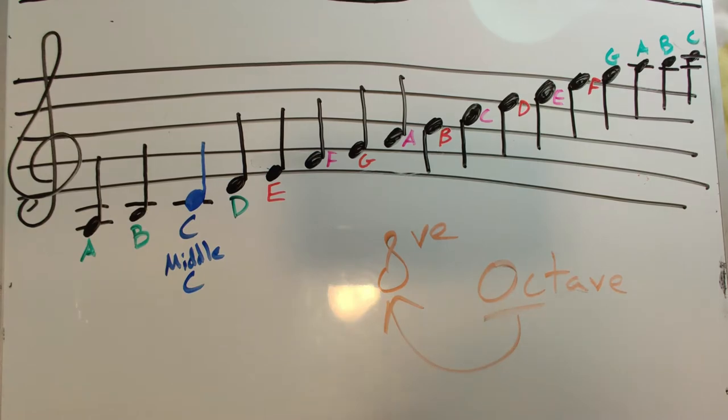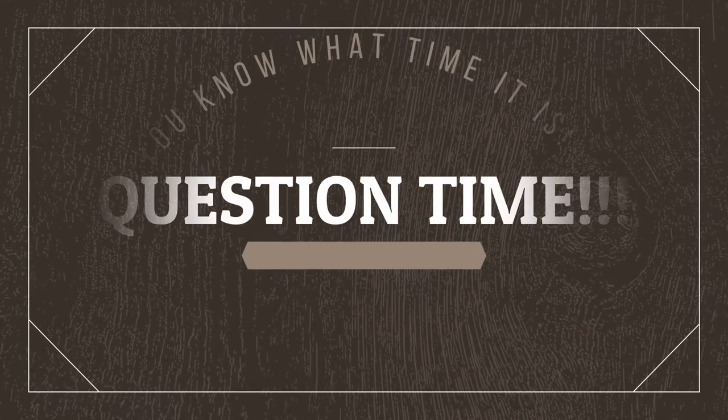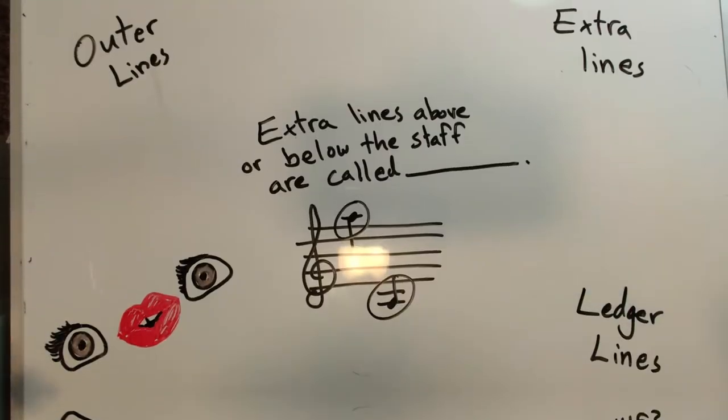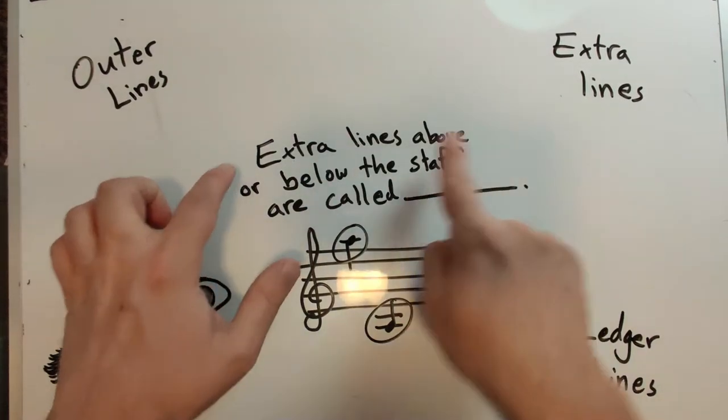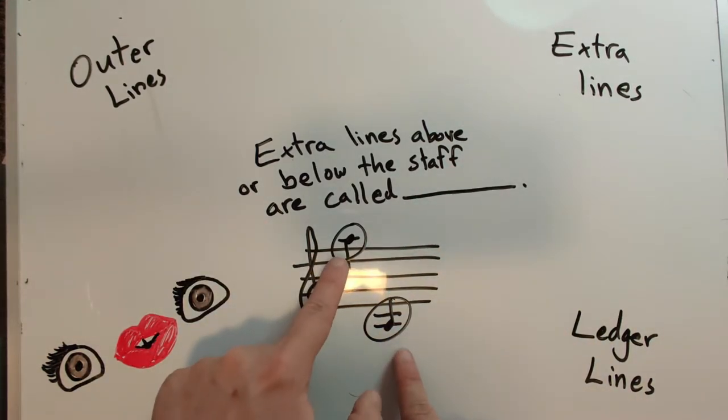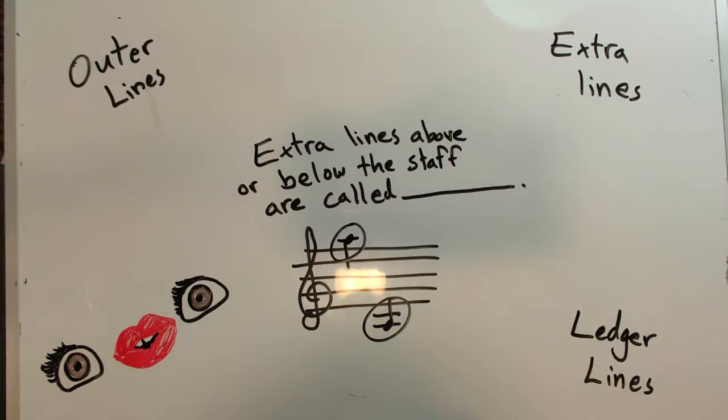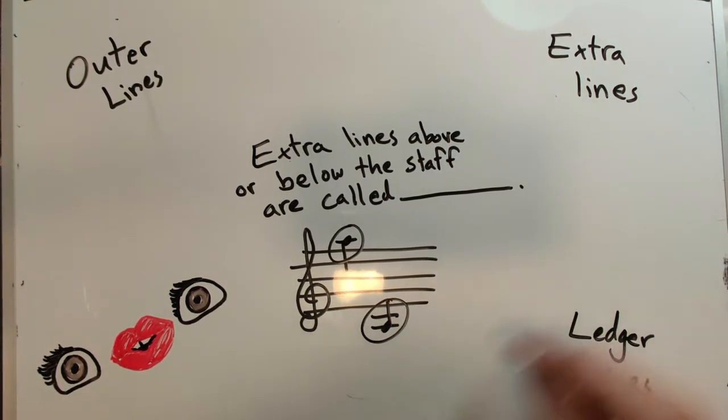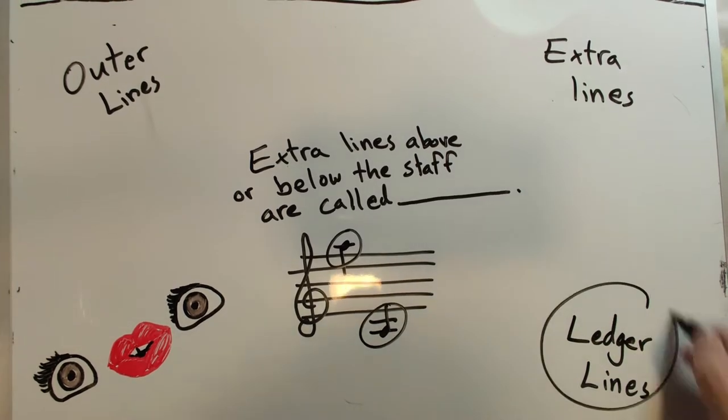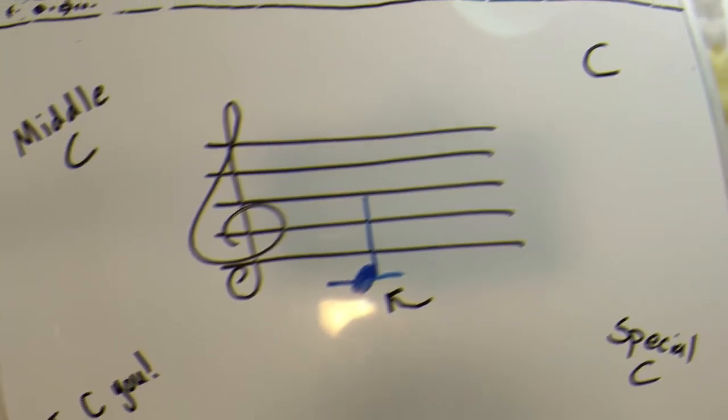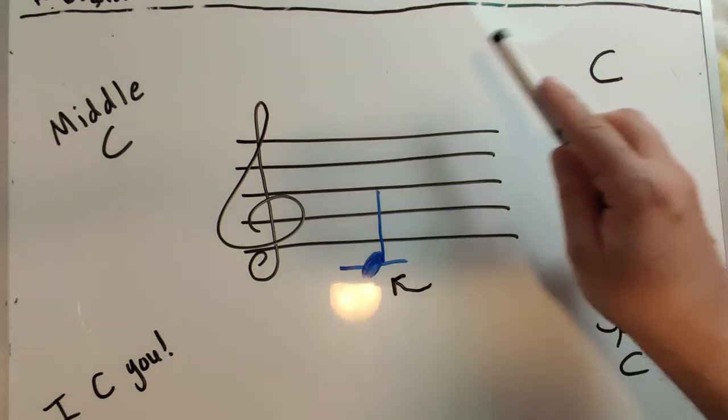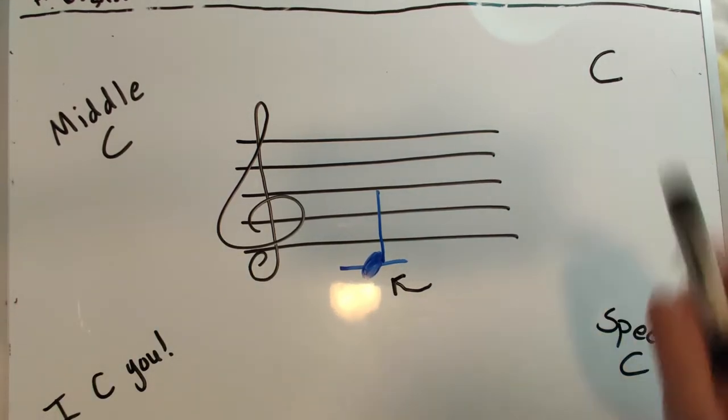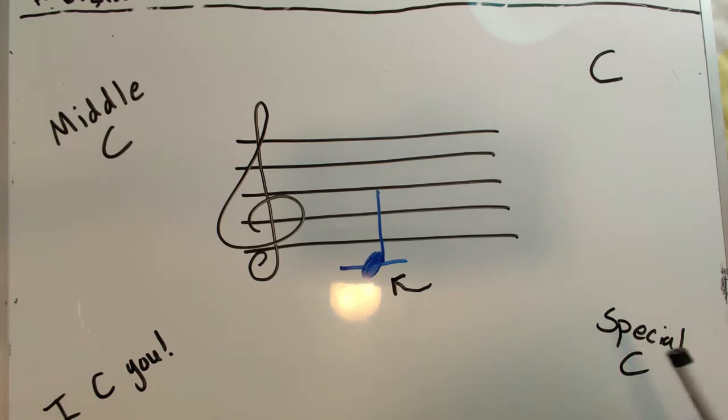So our first question is, the extra lines above or below the staff are called... You got three seconds. They're called the creepy eyes. I'm kidding. They're called the ledger lines. Next question. What is another name for this note? Is it middle C? Just a C? I see you! Or a special C?